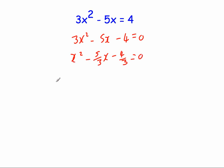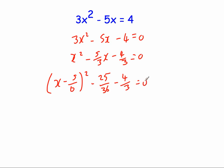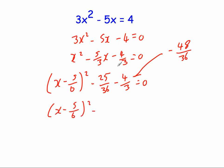Then we use completing the square: x minus 5 sixths, squared. We square this term, giving minus 25 over 36, then subtract 4 thirds equals 0. For 4 thirds with a common denominator of 36, that becomes minus 48 over 36 — multiplying both by 12. So we get x minus 5 sixths squared, minus 25 over 36 take away 48 over 36, which is minus 73 over 36, equals 0.